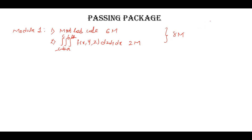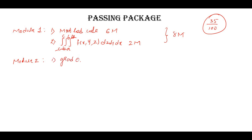Out of 100, the passing mark is 35. My aim is to show you how to get those 35 marks. Moving on to Module 2, which is vector calculus. If you study how to find the gradient of φ (del φ), divergence of vector F, and curl of vector F, definitely one problem will be there and you can get a minimum of seven marks.